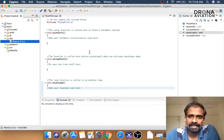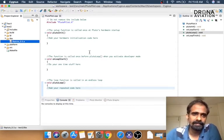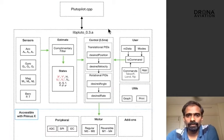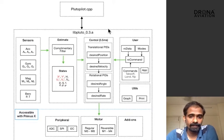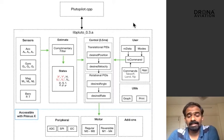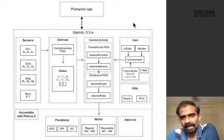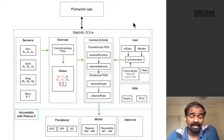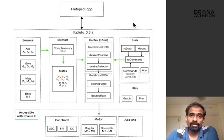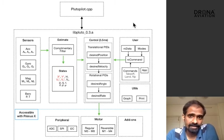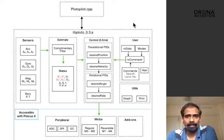Let's try to understand this a little bit more by digging a little bit deeper. As I told you, Plutopilot.cpp just by itself does not form the firmware. This diagram shows how Plutopilot.cpp and libpluto actually interact. Libpluto is a pre-compiled library which is primarily responsible for the stabilization and control of the drone. The user has access to all of this library using APIs. Now there are five major parts of this library. Let's look at them one by one.